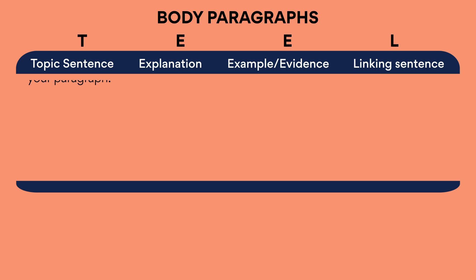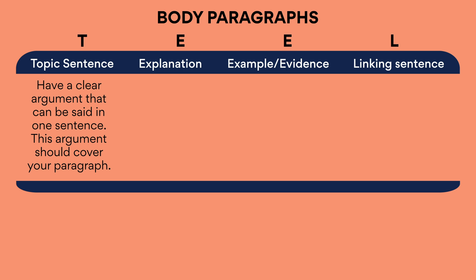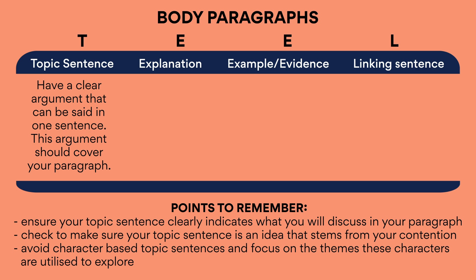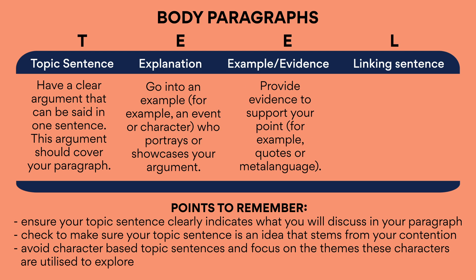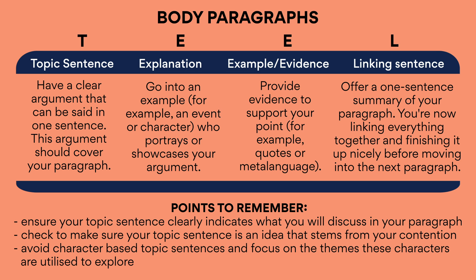T — topic sentence. You have to have a clear argument that can be said in one sentence, and this argument should cover your entire paragraph. Ensure your topic sentence clearly indicates what you will discuss in your paragraph. Check that your topic sentence has an idea that stems from your contention, and avoid character-based topic sentences — focus instead on the themes which these characters are utilized to explore. E — explanation: go into an event or character who portrays or showcases your argument. E — provide evidence to support your point, for example quotes or metalanguage. L — offer a one-sentence summary of your paragraph, linking everything together and finishing it up nicely before moving on to the next body paragraph.